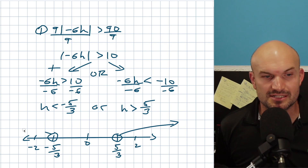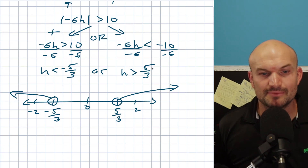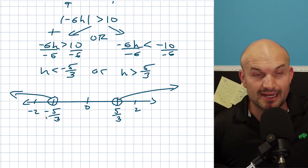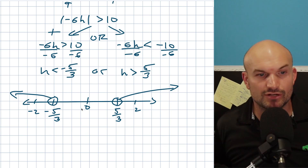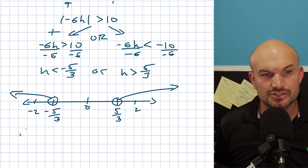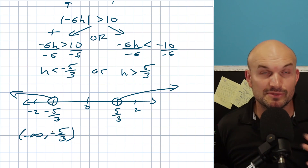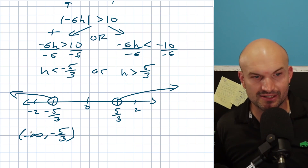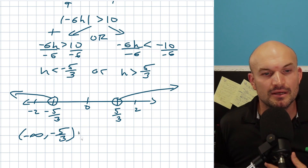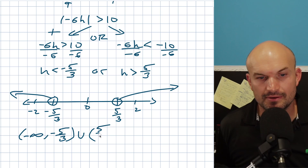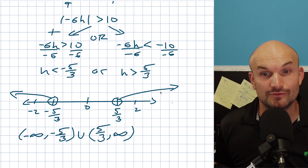H is less than negative five thirds — that's all values to the left. If we want to write this in interval notation, we basically say how far to the left and how far to the right is this graph going, and when is the graph not defined. We can write negative infinity to negative five thirds — using parentheses because negative infinity is not defined, nor is negative five thirds since it's less than not less than or equal to — then union, and then positive five thirds to infinity.